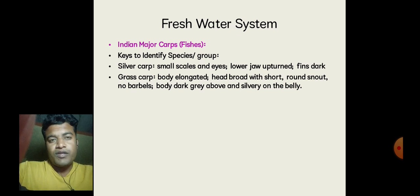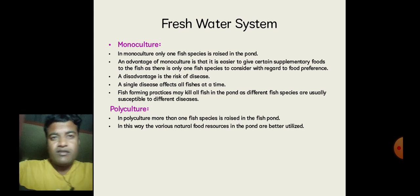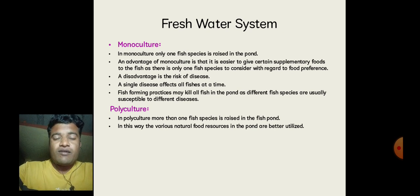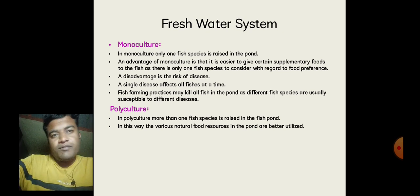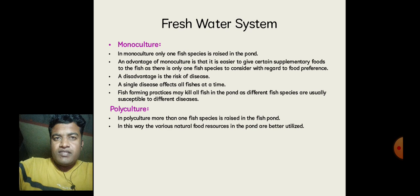Monoculture — what does this technique actually mean? In monoculture, only one fish species is raised in the pond. In any pond, a single type of fish species is grown, maintained and raised, and only that fish species population is increased. An advantage of monoculture is that it is easier to give certain supplementary foods to the fish, as there is only one fish species to consider with regard to food preference.